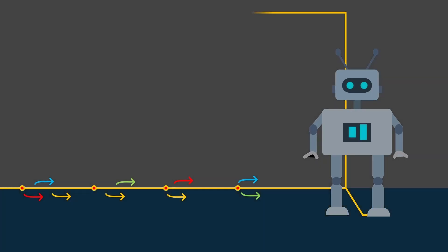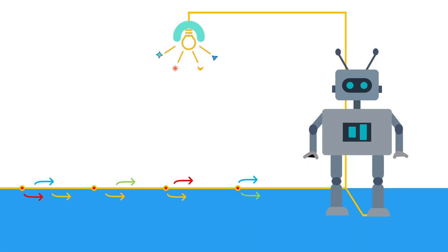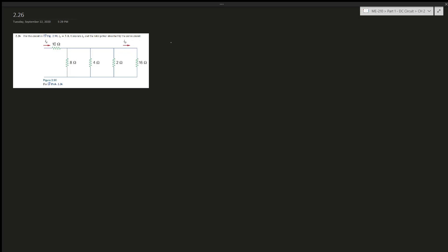Alright, question 2.26 says for a circuit in the figure that's been presented, I naught equals 3A, and we need to calculate ix and the total power absorbed by the entire circuit. First, we'll have to try to find things we can work with. We know that these four resistors are parallel, so we can calculate the total resistance or the equivalent resistance.